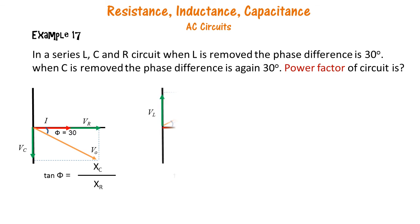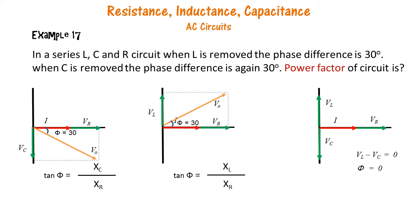Similarly, when the capacitor is removed, the voltage leads the current by 30 degrees. And since VL is equal to VC, VL minus VC is zero. The phase angle is zero and the power factor is hence equal to one.